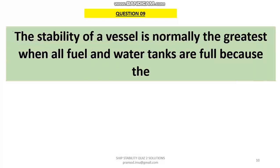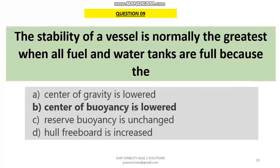Question 9: The stability of a vessel is normally greatest when all fuel and water tanks are full, because the centre of buoyancy is lowered. This is a principle used in submarines — when you need to dive down or come up, by filling ballast tanks you change the buoyancy force against the weight, which helps the vessel go down or up as required. That is what submarines are designed for.